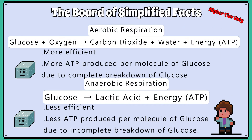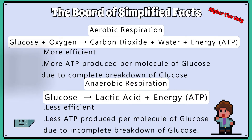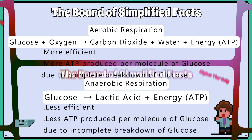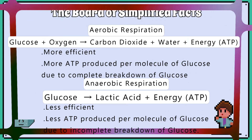For higher tier, you also need to know that anaerobic respiration is less efficient than aerobic respiration because of the incomplete breakdown of glucose. Less ATP is produced per molecule of glucose in anaerobic respiration than in aerobic respiration.